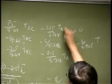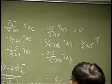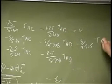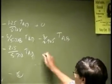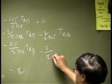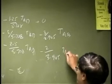This should have been T, D and D. And now we are looking at the TAB and negative 2 over 3.905 TAB.